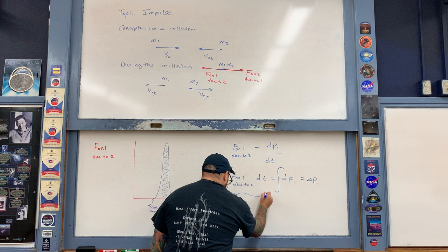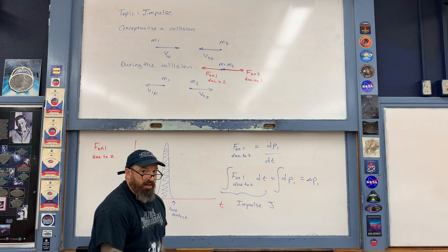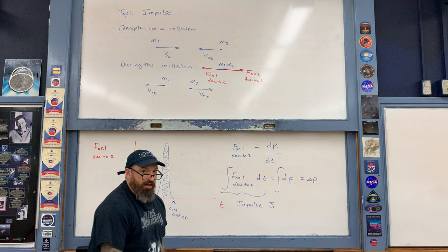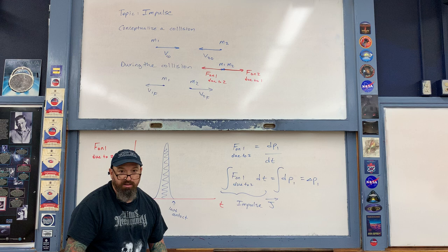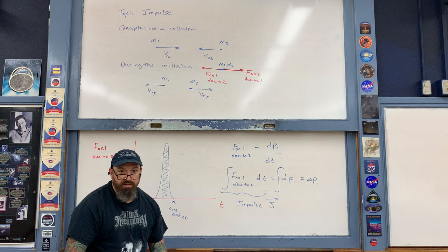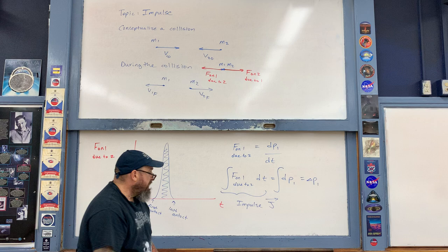That area under the curve is given a name: impulse, denoted by the letter J. Technically it is a vector quantity, even though we're describing this one-dimensional case. The impulse J is said to be delivered or imparted to cart one. The units of impulse are the same as momentum — kilogram meters per second — but more descriptively expressed as newton-seconds, which reflects force times time.